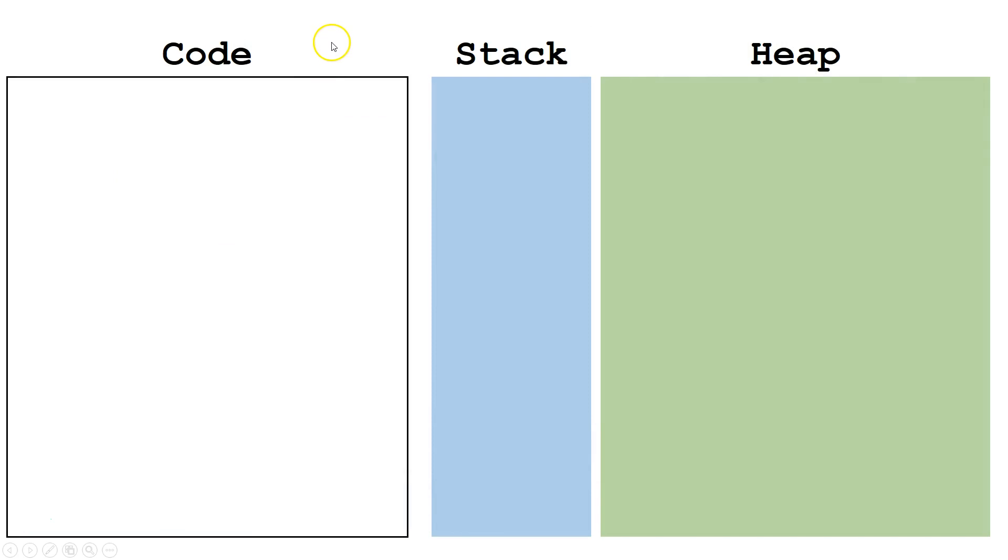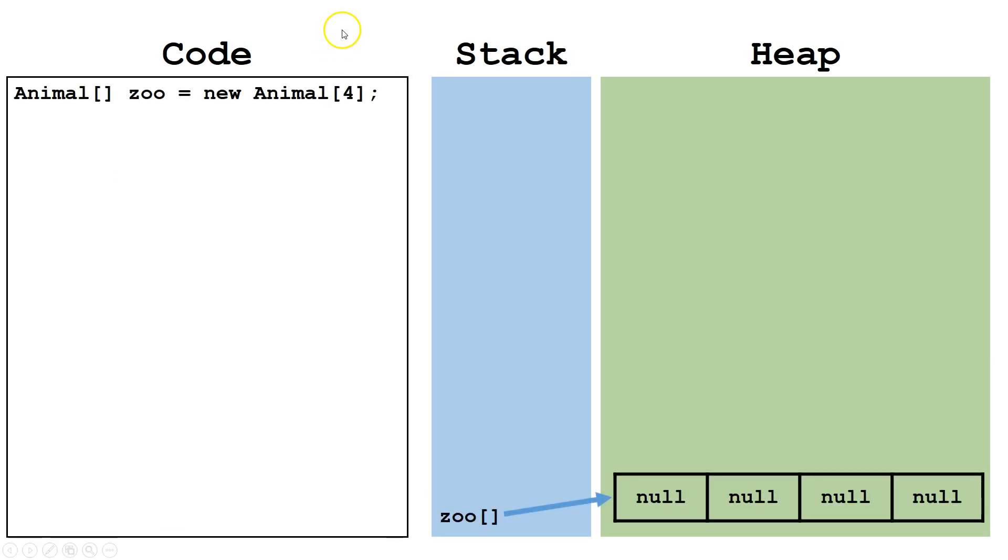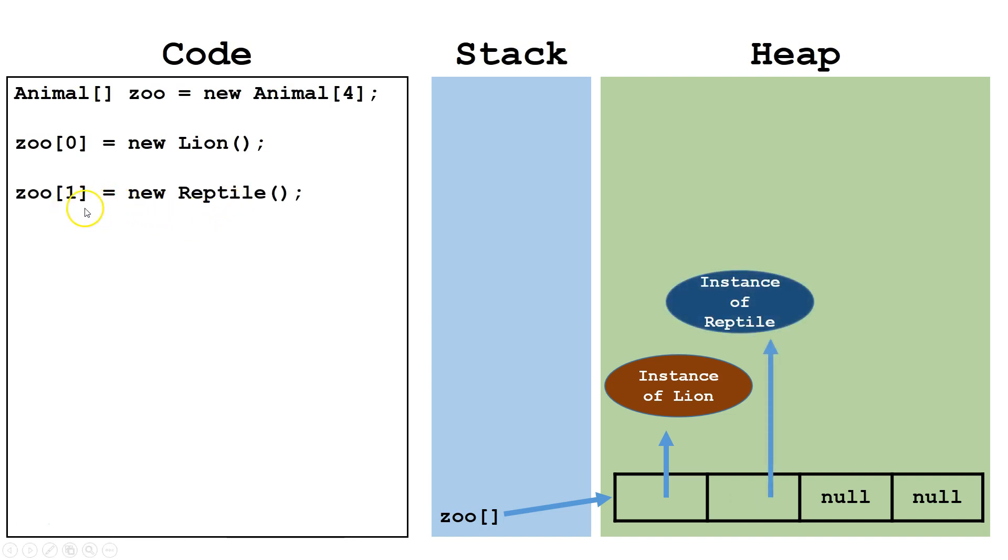Let's write some code and see how this could work for us in practice. Imagine we were trying to create an array zoo of type Animal and had it point to an array of size 4 of animals. We could initialize index 0 with a Lion, index 1 with a Reptile, index 2 with a Bat because Lion, Reptile, and Bat are all subclasses of Animal.